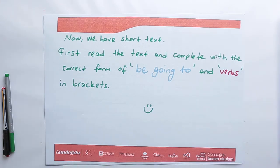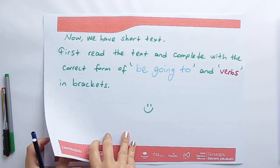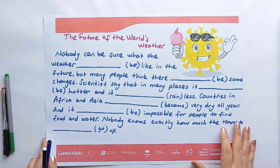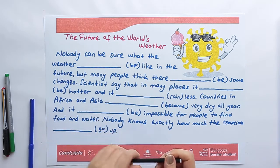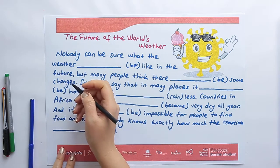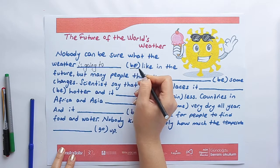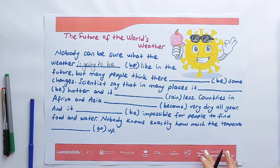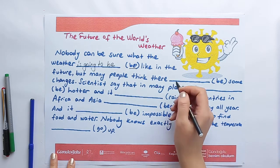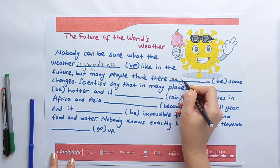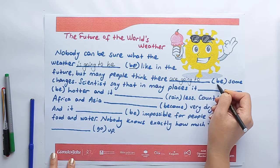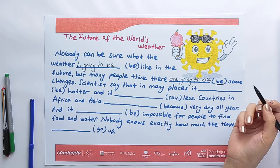Now we have a short text. First read the text, then complete with the correct form of be going to and the verbs in brackets. The future of the world's weather. Nobody can be sure what the weather is going to be like in the future. But many people think there are going to be some changes.